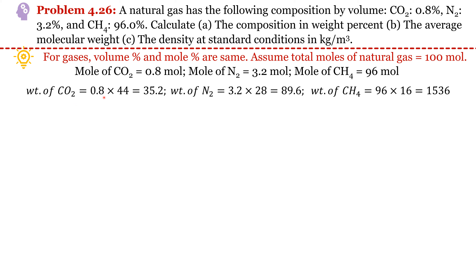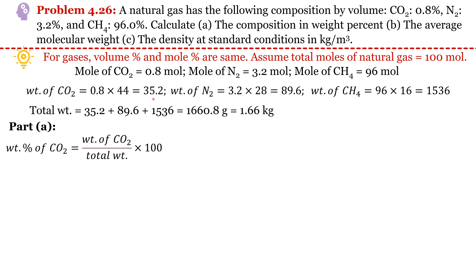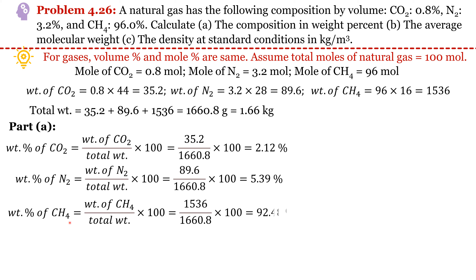Weight of CO₂ equals moles of CO₂ times its molecular weight. Similarly, weights of N₂ and CH₄ are estimated. Adding all component weights gives a total weight of 1.66 kg. For Part (a), weight percentage of CO₂ equals (weight of CO₂ / total weight) × 100 = (35.2 / 1660.8) × 100 = 2.12%. Similarly, weight percentages of N₂ and CH₄ can be estimated.